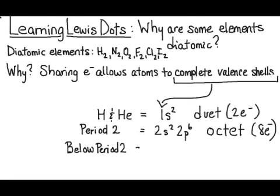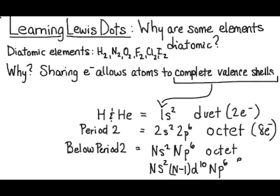Below period 2 on the table, they have ns², whatever level it is, np⁶. That would be an octet if it's a main group element. If I'm a transition metal element, I have the ns², and then I have n-1 d¹⁰. That means that one lower shell, and that's the d electrons that fill across the transition series. Then you go into the main group again and start filling those p orbitals. These elements, those in periods below period 2 on the table, because they have those d orbitals available, can have expanded octets.